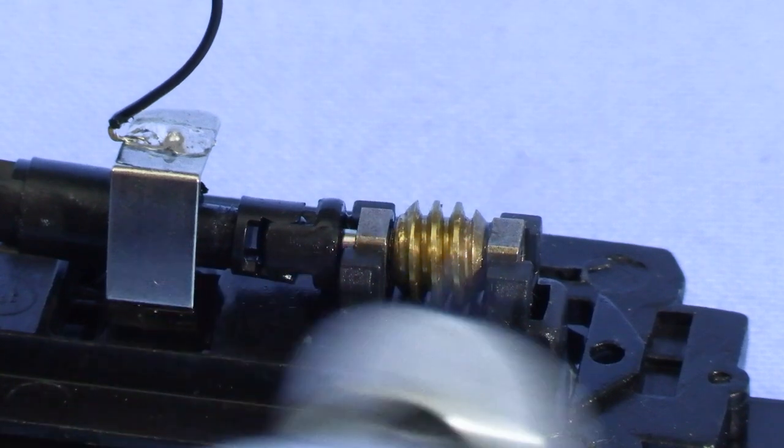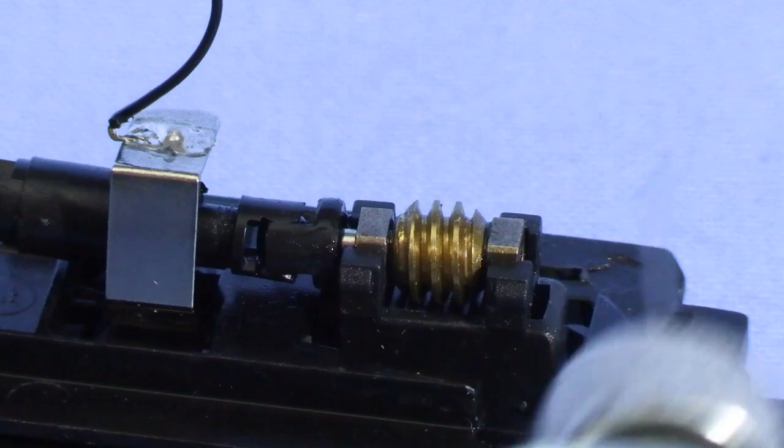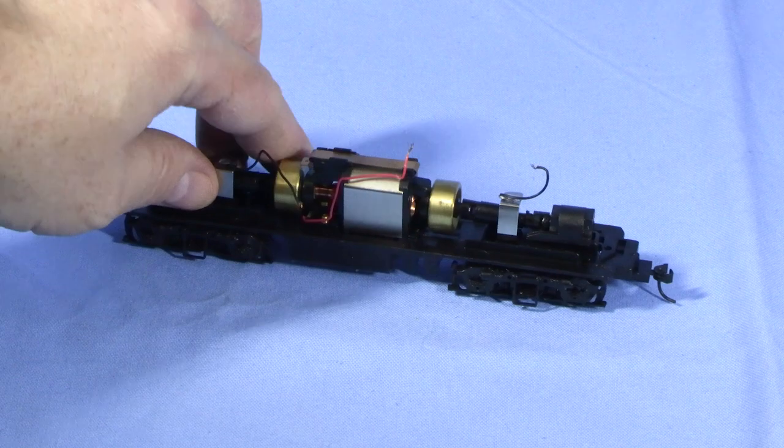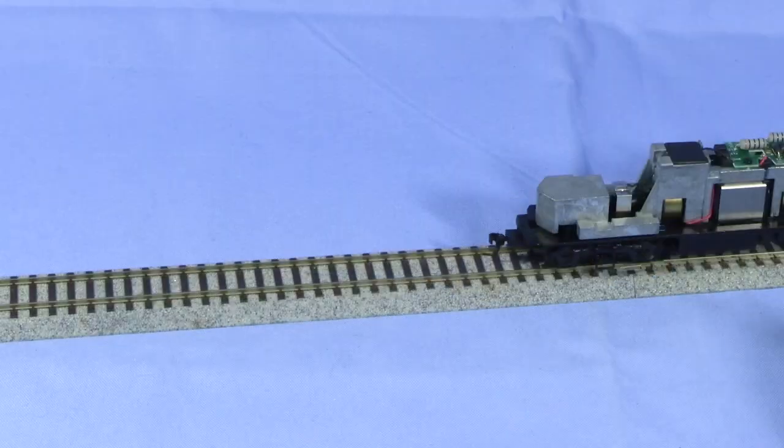Before I reattach the worm gear covers, I'll put a drop of plastic compatible oil on the worm bearings. I'll also put a drop on the bearings at each end of the motor. The mechanism spins easily now. Of course, the real test is to see how well the chassis works on track power after it's been reassembled.